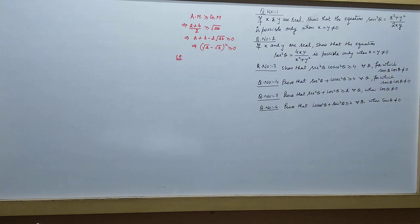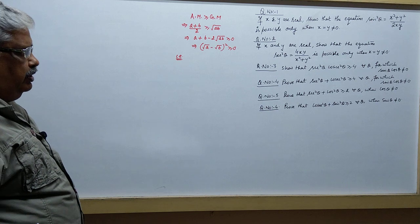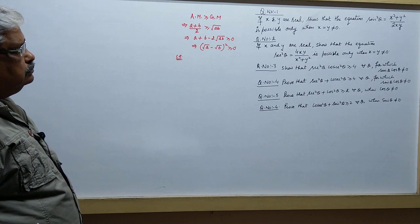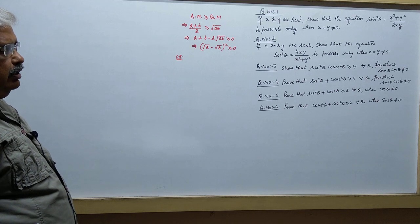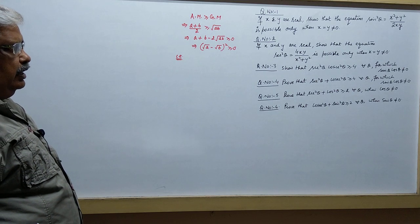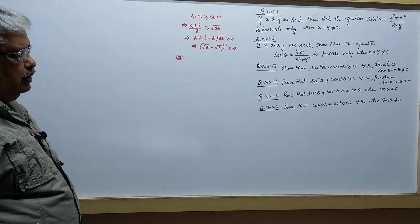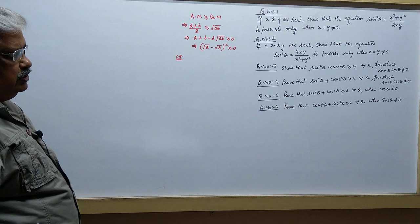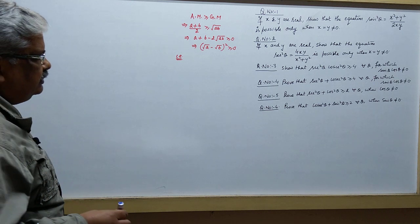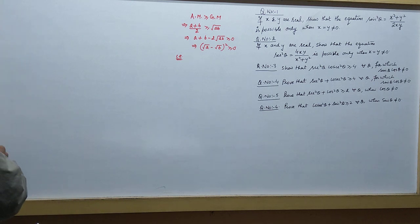Next video on trigonometric functions. In this case we will use the limiting value of sin and cos — that means the range of trigonometric functions. If x and y are real, show that the equation is possible only when x is equal to y is equal to 0.